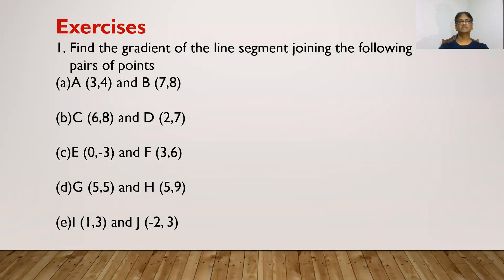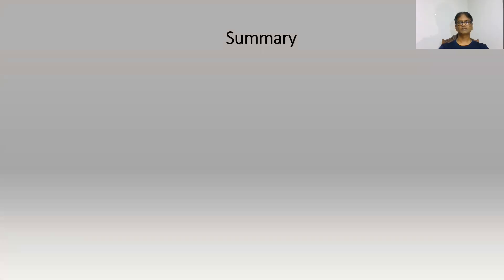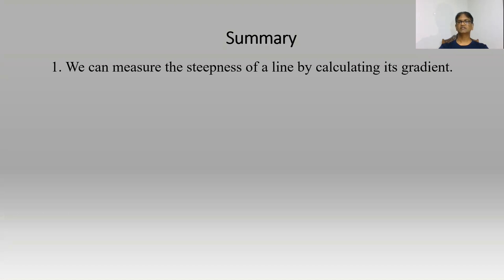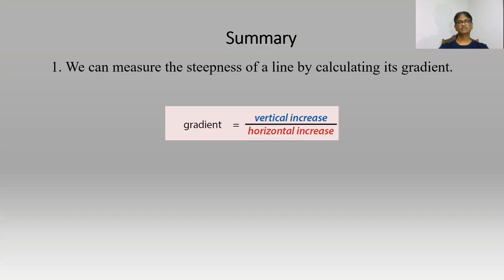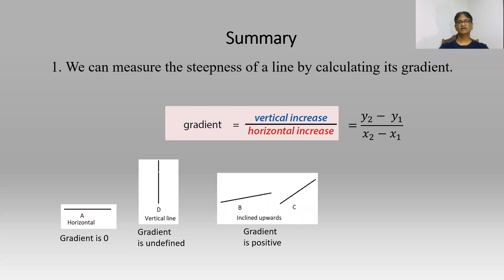Dear students, you have been given a few questions so that you can practice your knowledge of gradient. We have learned that we can measure the steepness of a line by calculating its gradient. Gradient is given by vertical increase divided by horizontal increase — the formula is (y2 minus y1) over (x2 minus x1). A horizontal line has gradient 0. A vertical line has gradient undefined. A line inclined upwards has a positive gradient. A line inclined downwards has a negative gradient.